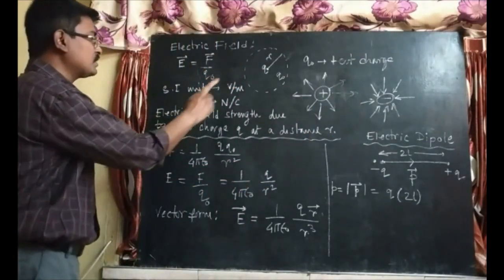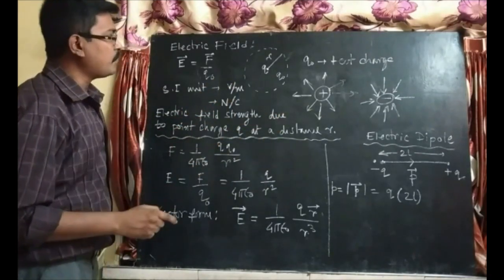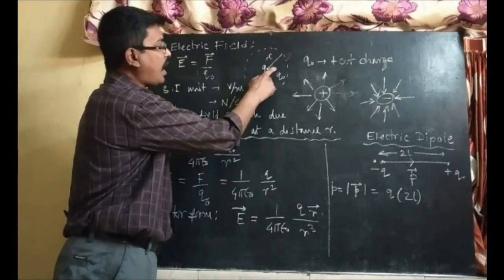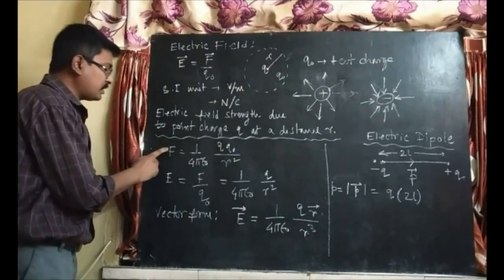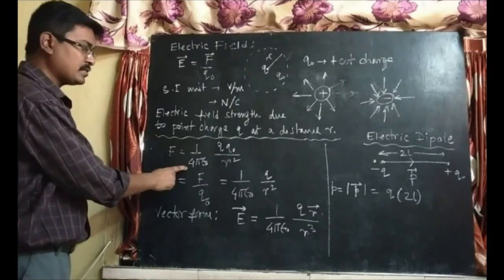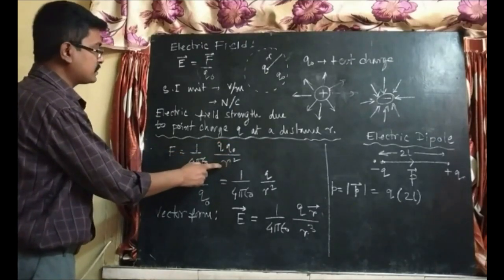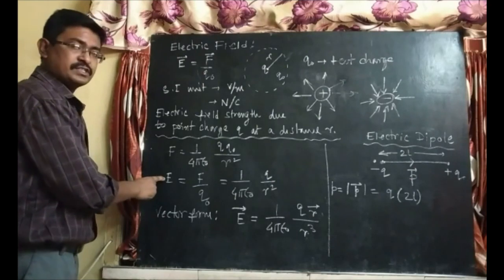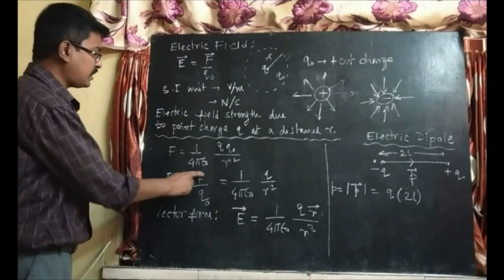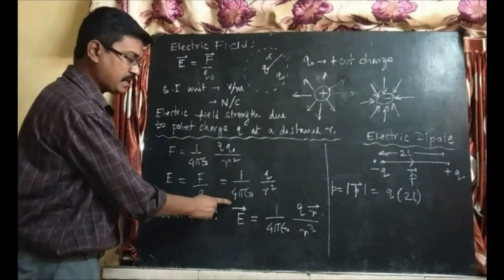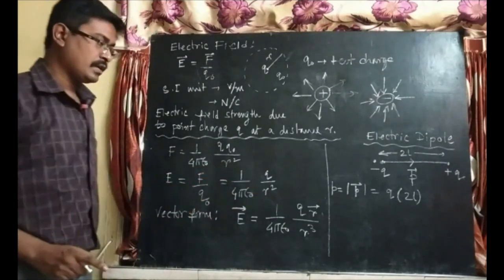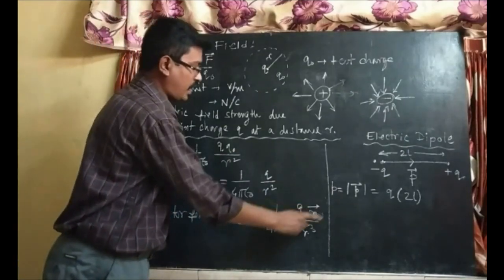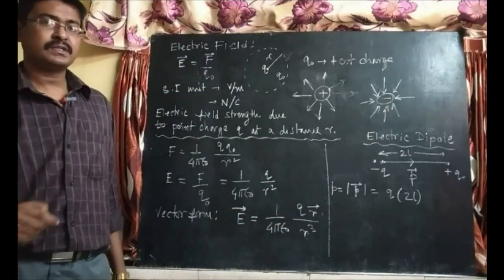Now electric field strength due to a point charge Q at a distance R. Suppose a charge is kept at a distance R from charge Q. Then from Coulomb's law, F equals 1 over 4π ε₀ times Q·Q0 over R squared. In vector form, the electric field strength is given by 1 over 4π ε₀ times Q·r-hat over R squared, just like Coulomb's law in vector form.